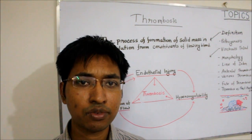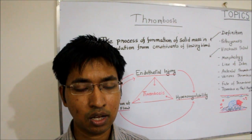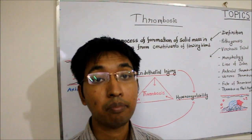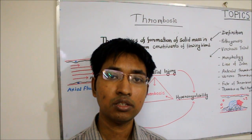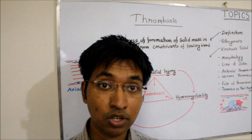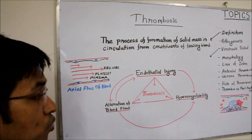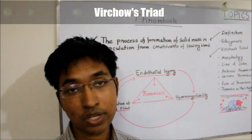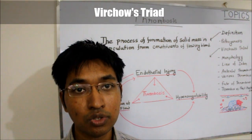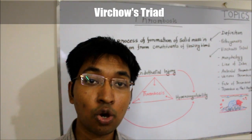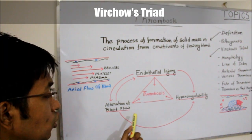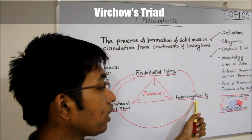Now that we have defined thrombus, you may be asking how does a thrombus develop? We will move on to the next point and discuss the pathogenesis of thrombosis. Whenever we discuss pathogenesis of thrombosis, Virchow's triad will come into discussion. As you can see I have drawn an image of Virchow's triad, and in this triad we have three components that are responsible for development of thrombus: endothelial injury, alteration of blood flow, and hypercoagulability.